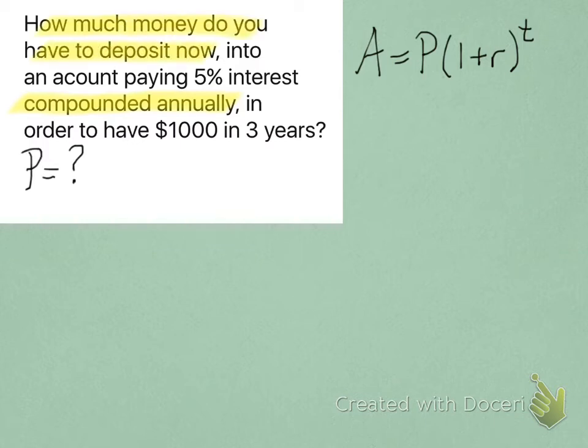But now, it's a little bit different of a setup. We want to know how much money we have to deposit now. The initial amount is the letter P. Before, we knew what P was, but now we don't.